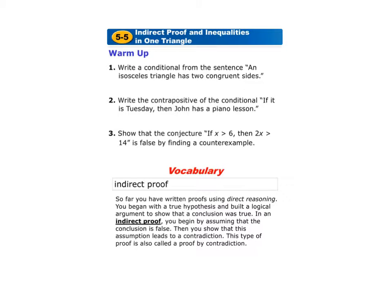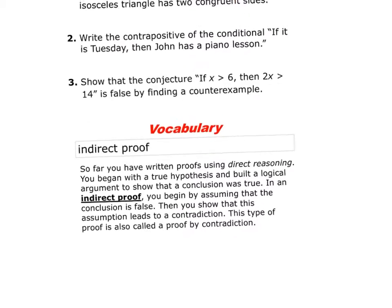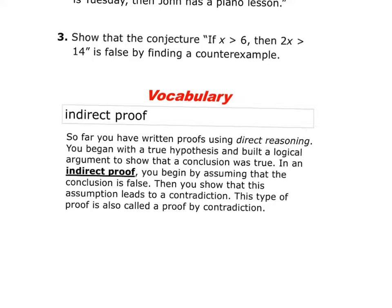This video is going to cover Chapter 5, Section 5. The first thing we started with today was the indirect proof. The warm-up went over the conditional form of the sentence — the if-then, the contrapositive, and a conjecture or a counterexample. We'll revisit that when we talk about indirect proofs.